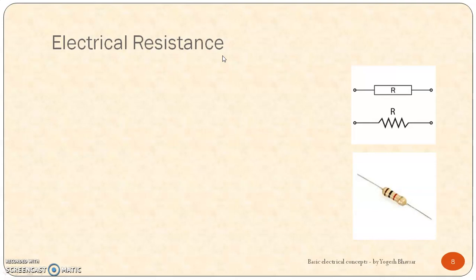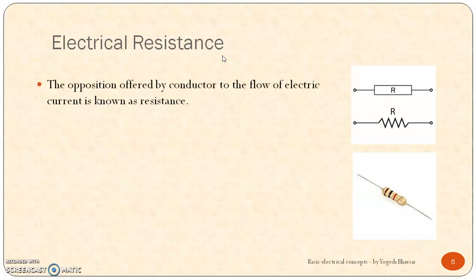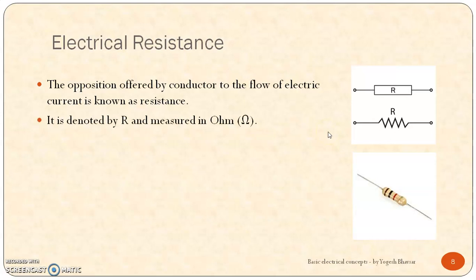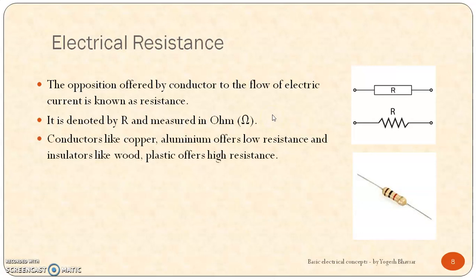The next concept is electrical resistance. Electrical resistance is nothing but the opposition offered by the conductor to the flow of electric current. Here is the symbol of electrical resistance — in various circuits we have seen this type of element which is called the resistor, which opposes the current flowing in the conductor. It is denoted by R and measured in ohms, named after the scientist George Ohm. Conductors like copper and aluminum offer low resistance, and insulators like wood and plastic offer high resistance.